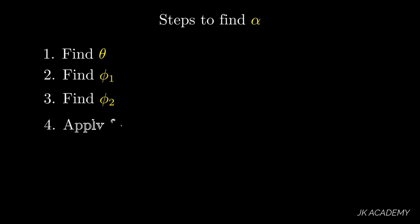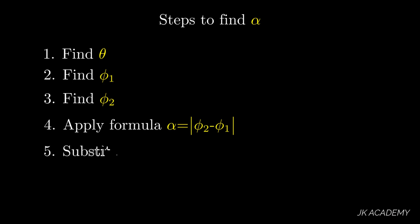Step number four: apply the formula. Alpha equals the modulus of phi2 minus phi1. The modulus handles the sign convention — if phi2 minus phi1 is negative, the modulus gives a positive output. Step number five: substitute the theta found in step one into the expression from step four to get the value of alpha.